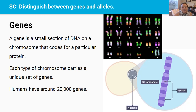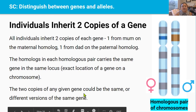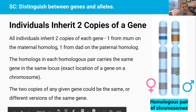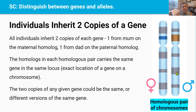Across these 23 pairs of chromosomes in humans there are around 20,000 genes. All individuals inherit two copies of each gene — one copy comes from mom, located on the maternal homologue, and one copy comes from dad, located on the paternal homologue. The homologues in each homologous pair carry the same gene at the same locus. Locus, or loci if plural, describes the exact location of a gene on a chromosome.